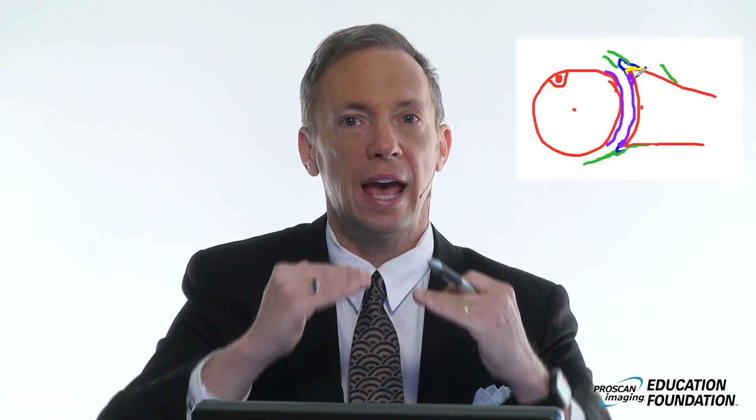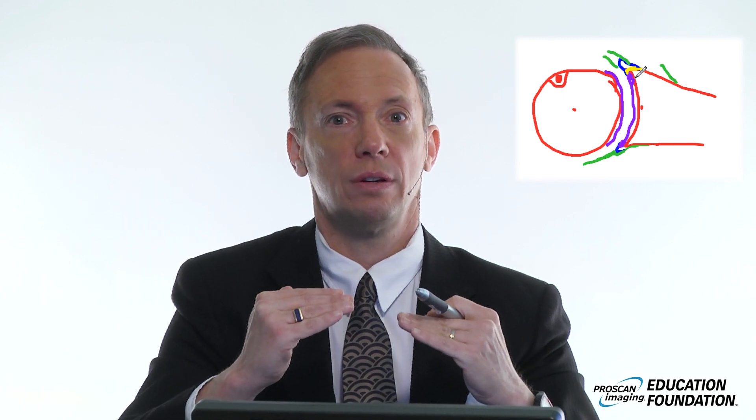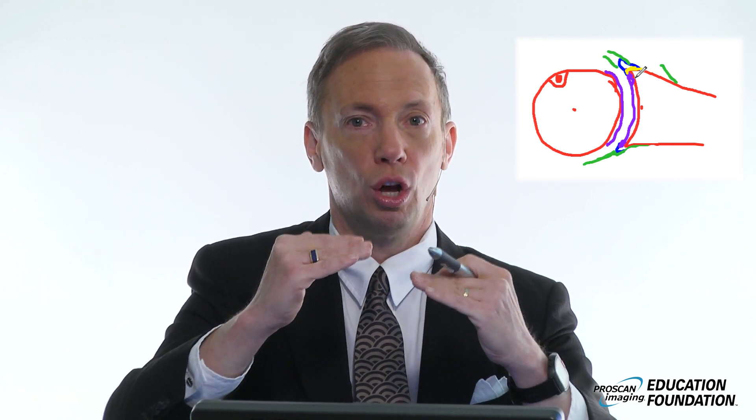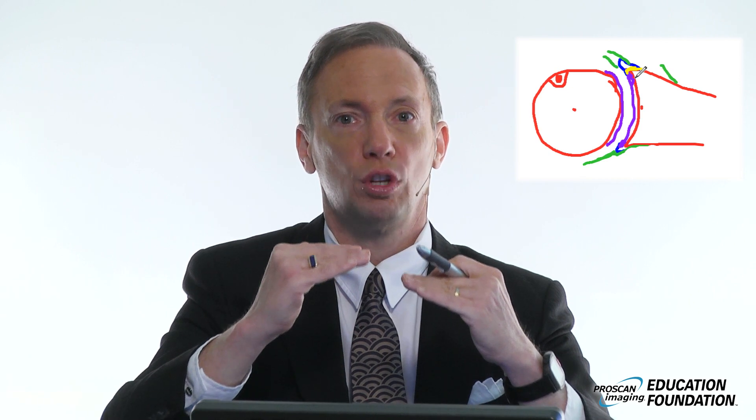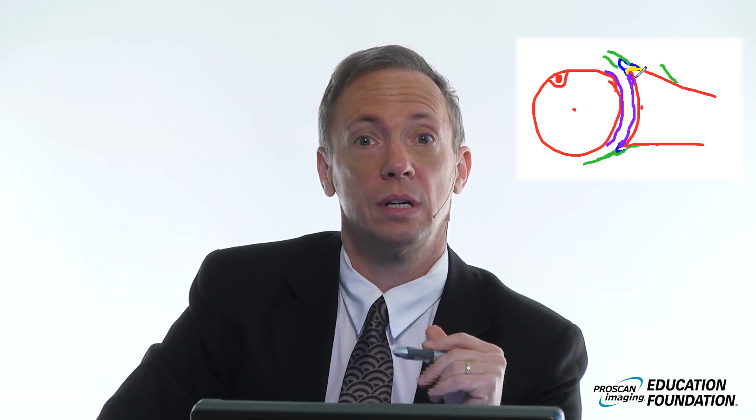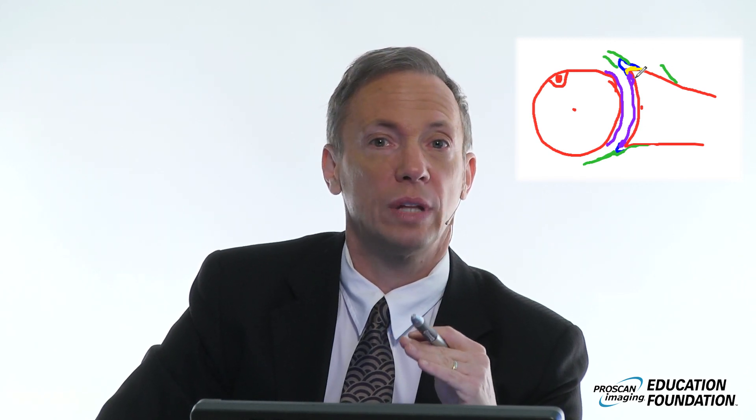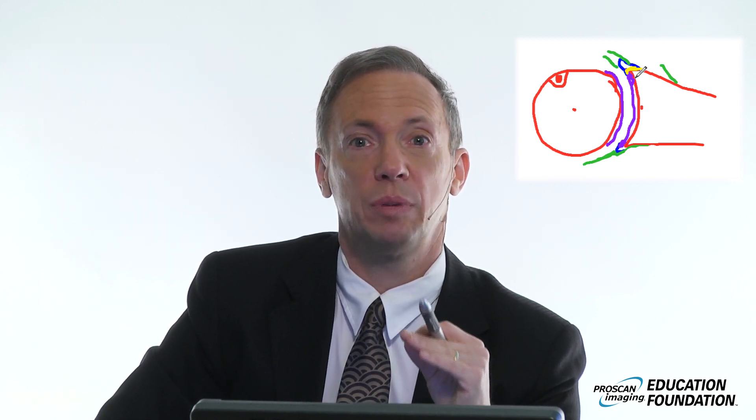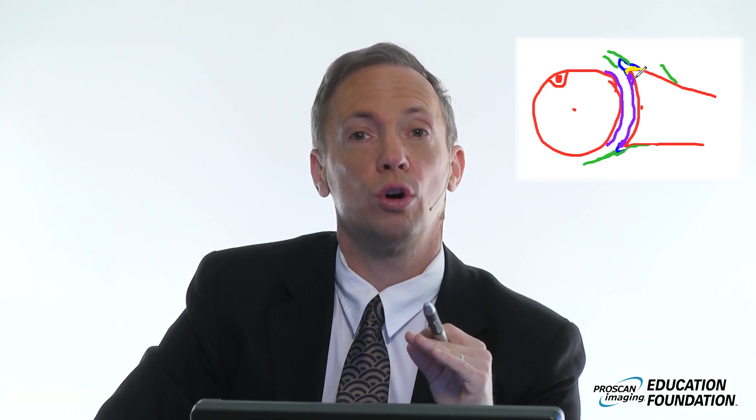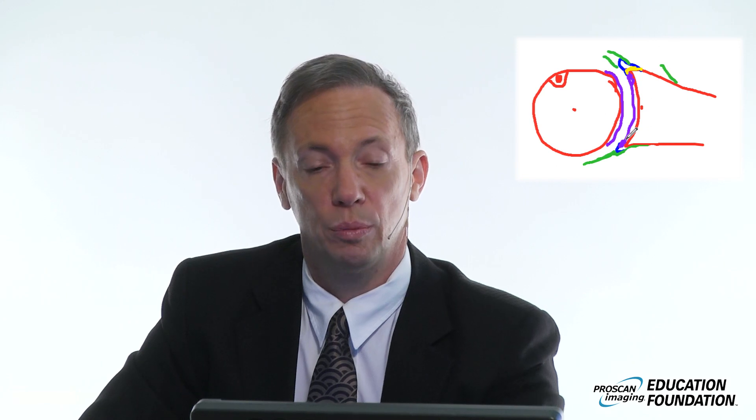The variations are going to be above the humeral and glenoid equator. The true tears, the flap tears, the partial thickness tears, the Bankart lesions are going to be below the equator of the humeral head and the glenoid. Now in the back, this is a less consistent phenomenon. In fact, in the back, we don't like to see any deep clefts, although we will see the purple hyaline cartilage undercutting the posterior labrum.